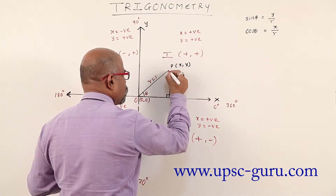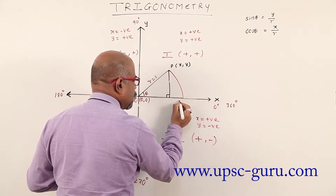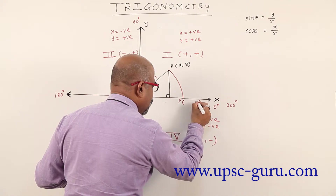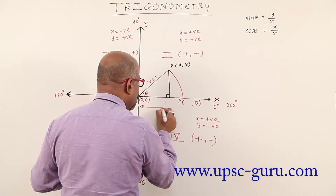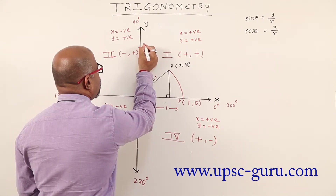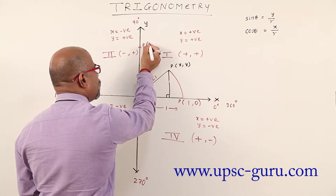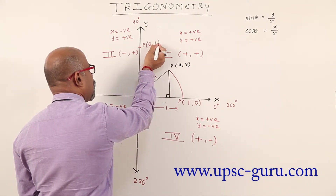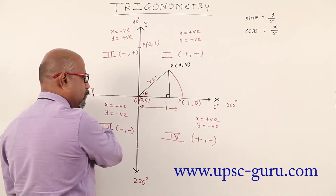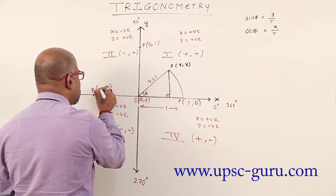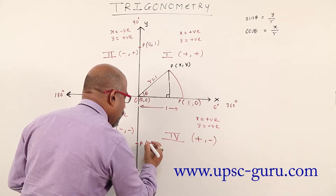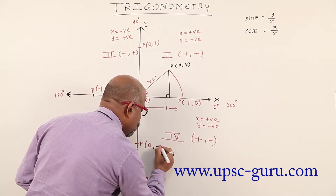When r equals 1 and point P is on the positive direction of x-axis, y coordinate is 0 and r equals 1, so P equals (1, 0). When P is on positive direction of y-axis, x coordinate is 0 and r equals 1, so P equals (0, 1). When P is on negative direction of x-axis, y coordinate is 0 and x equals minus 1. When P is on negative direction of y-axis, x coordinate is 0 and y equals minus 1.